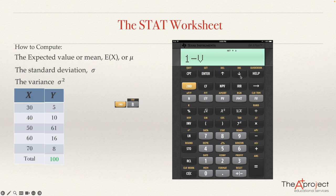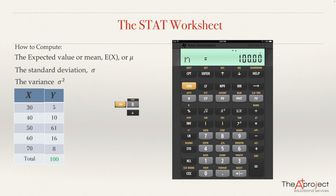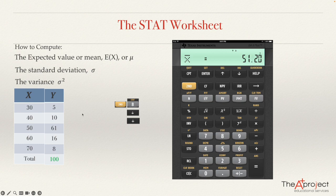Scroll down to see the answers. I notice that n equals 100. Remember the total sum of probabilities is 1, but since we multiplied every probability by 100, the new sum is 100. This helps confirm the input was correct — if you multiplied by 1,000, n should be 1,000. Scroll down and the calculator shows the mean is 51.20.